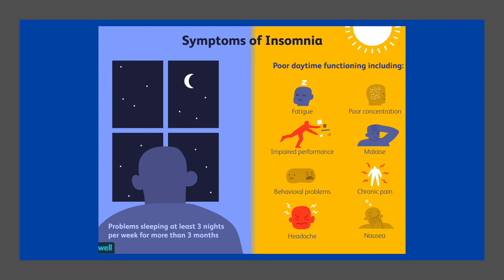About 6% of people have insomnia not due to another problem that lasts for more than a month. People over the age of 65 are affected more often than younger people, and females are affected more often than males. Symptoms of insomnia include difficulty falling asleep, waking up during the night and being unable to return to sleep, waking up early, difficulty focusing on daily tasks, difficulty remembering, daytime sleepiness, irritability, depression, anxiety, low energy, trouble concentrating, and being unnecessarily aggressive or impulsive.